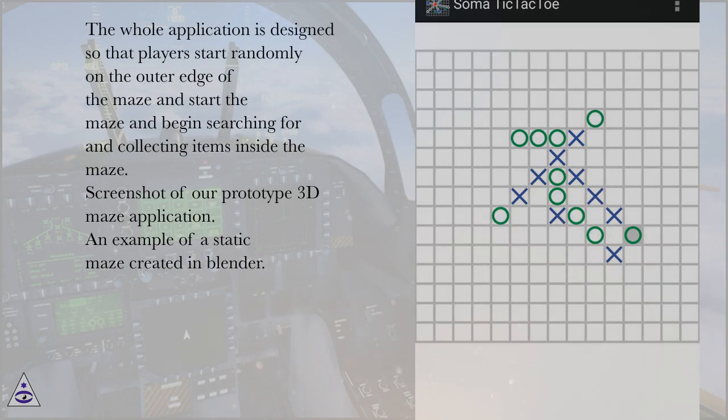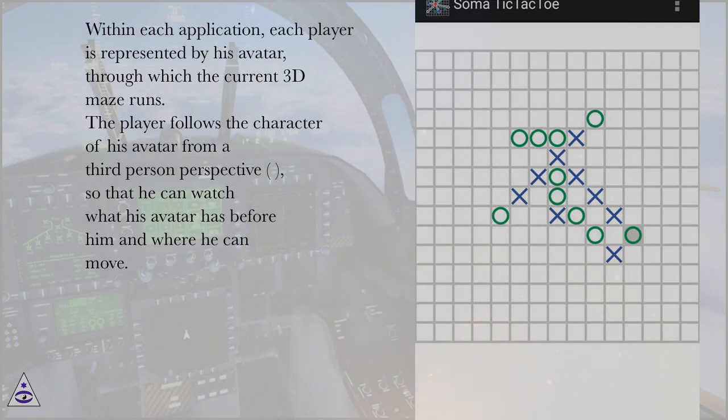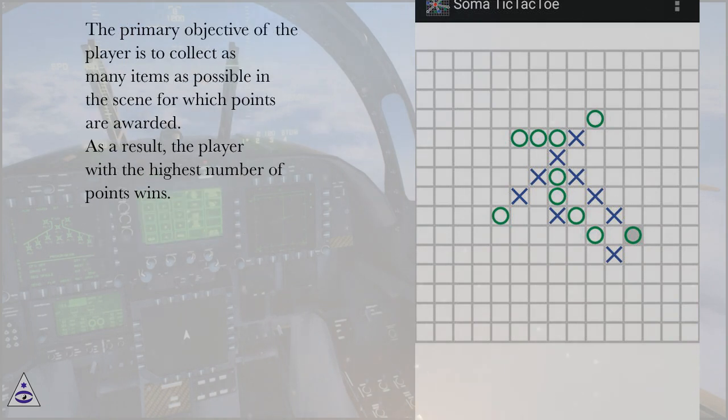Screenshot of our prototype 3D maze application. An example of a static maze created in Blender. Within each application, each player is represented by his avatar, through which the current 3D maze runs. The player follows the character of his avatar from a third-person perspective, so that he can watch what his avatar has before him and where he can move. The primary objective of the player is to collect as many items as possible in the scene for which points are awarded. As a result, the player with the highest number of points wins.